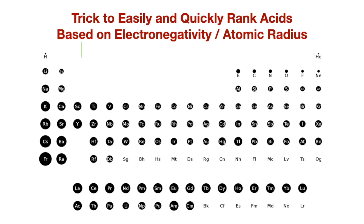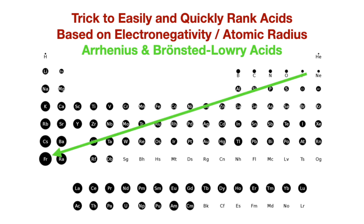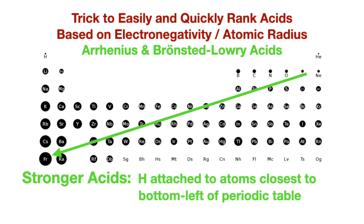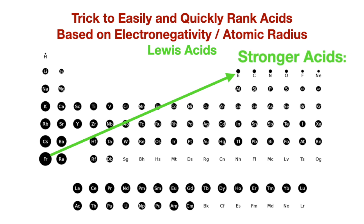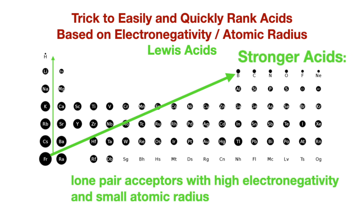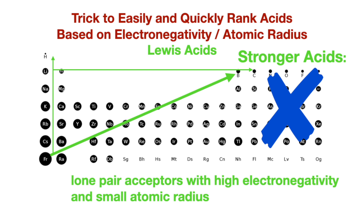A trick to help rank proton-donating acids is to look at the atom attached to the hydrogen, and the closer to the bottom left corner of the periodic table it is, the stronger the acid will be — meaning going down in a group or going left in a period. The trick to ranking lone pair-accepting acids is to look at the atom accepting the lone pair, and the closer to the top right it is, the stronger the acid — going up in a group and going right in a period. Note that nonmetals at the top right are not included here because they're more likely to be lone pair donors, known as Lewis bases.